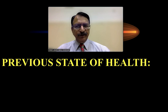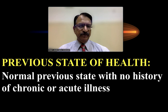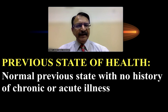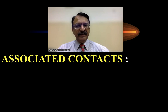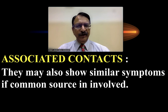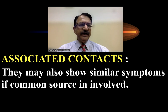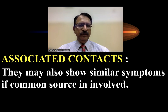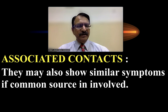The previous state of health is important: the person was previously perfectly normal with no history of any acute or chronic illness. So a person in perfect health who suddenly develops symptoms after ingesting food or something raises suspicion of poisoning. Regarding associated contacts, if more than one person ingested the same thing and all show common symptoms, that also raises suspicion of poisoning.